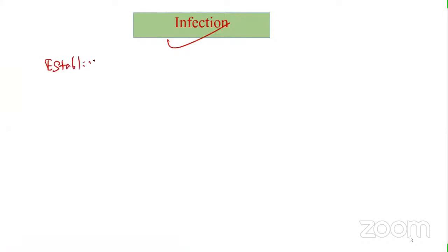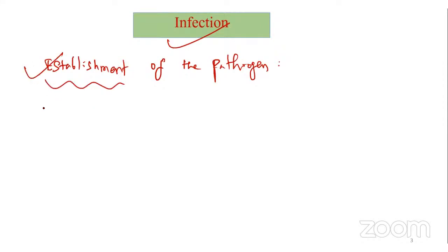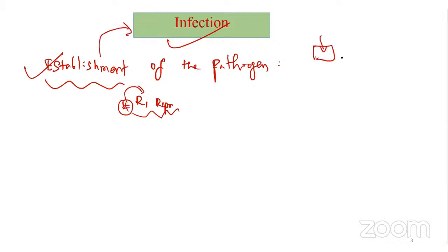Infection, scientifically, means the establishment of the pathogen within a cell or plant. A virus must be able to proceed with replication - it must fully overtake the tissue. Simply entering and staying inside is not called infection; it must get established inside the cell. Only then do we call it an infection.